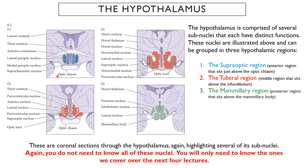We start with the supraoptic region in blue. Highlighted nuclei in the supraoptic region include the preoptic nuclei — lateral and medial preoptic nuclei. We also have the suprachiasmatic nucleus, which we won't be talking about in this portion of the course, but we will be talking about the suprachiasmatic nucleus when we talk about sleep.